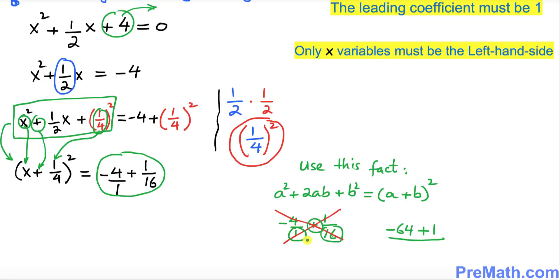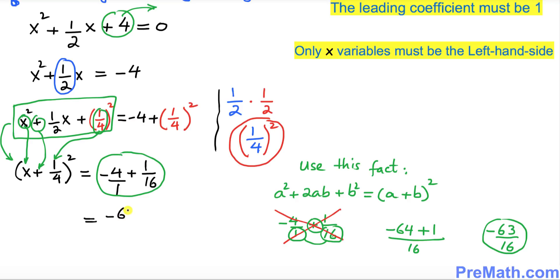Simplifying, negative 64 plus 1 is negative 63 divided by 16. So the simplified result for these two fractions is negative 63 over 16. On the left hand side we have (x plus 1 over 4) squared equaling negative 63 over 16.